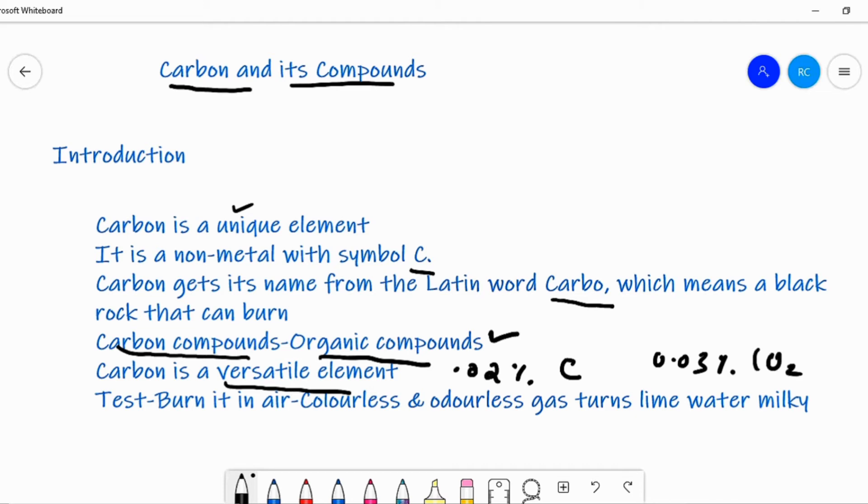In spite of this small amount of carbon available in nature, the importance of carbon seems to be immense. A simple test to identify carbon in a material is to burn it in air so that a colorless, odorless gas will be forming and that gas is carbon dioxide and it turns lime water milky.